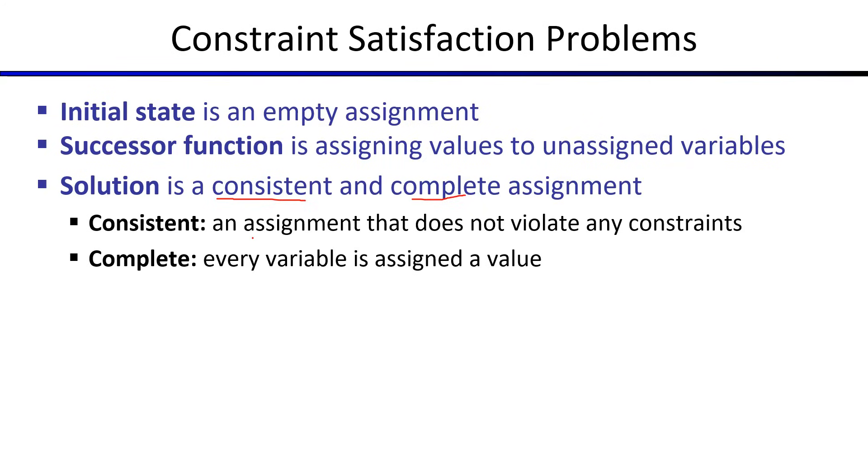Consistent implies that no constraint is violated, and completeness ensures that every variable is assigned a value. If we consider the previous problem where we have two variables x1 and x2, the domain of x1 is 1, 2, and the domain of x2 is 2, 3.